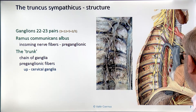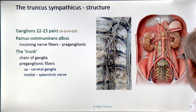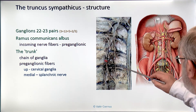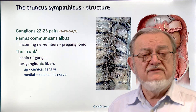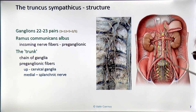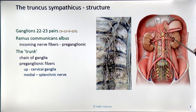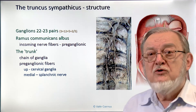Some fibers go medially in the thoracic area — these are the splanchnic nerves. Usually, but not always, we have two: a major and a minor splanchnic nerve. The thoracic splanchnic nerves supply the celiac ganglion and partially the superior mesenteric. The majority of the superior mesenteric and the entire inferior mesenteric ganglia receive similar nerve fibers going medially from the sympathetic trunk — these are named the lumbar splanchnic nerves.